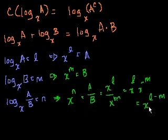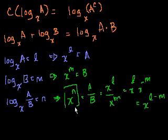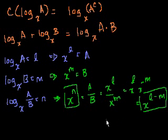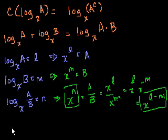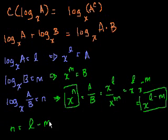So we know that x to the n is equal to x to the l minus m. Those equal each other, so n is equal to l minus m.